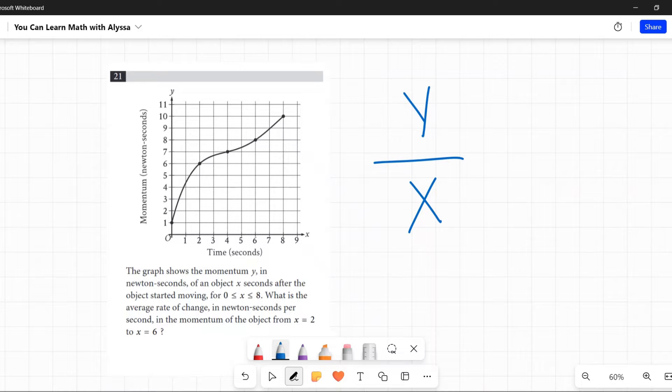Even if that average rate of change didn't trigger that memory in your mind of saying it's slope, hopefully when they're saying newton seconds per second - so y's per x's, y's divided by x's - that will get you thinking on test day like, are they meaning slope? Yes, slope is average rate of change.